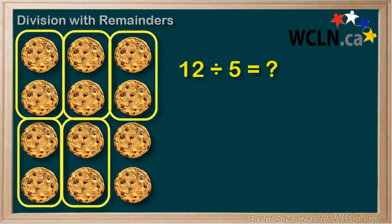But we noticed that there are two cookies left over. What does it mean if we can't divide them evenly and we have leftovers or remainders? What do we do with the two remaining cookies?